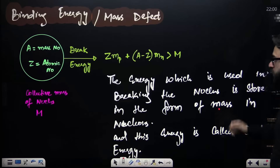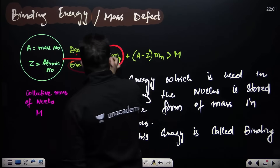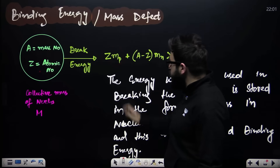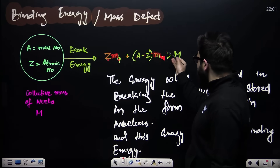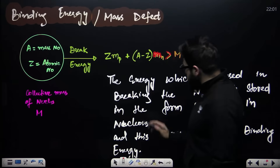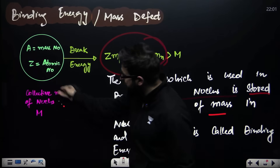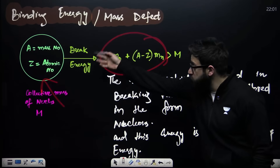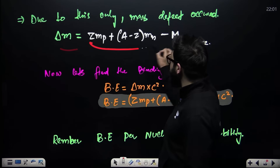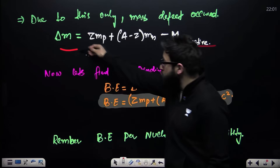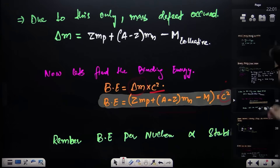Binding energy: when you break a nucleus, you use energy to remove all nucleons. The separated nucleons — z protons of mass z×mₚ and (A−z) neutrons of mass mₙ — have greater total mass than the original nucleus. The energy used in breaking the nucleus is stored as this mass difference. Mass defect = final mass − initial mass. Binding energy = Δm × c².